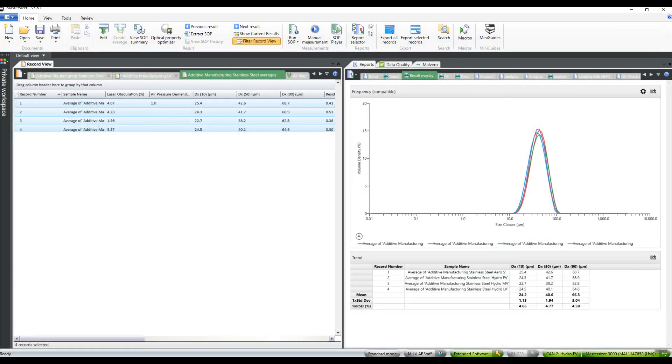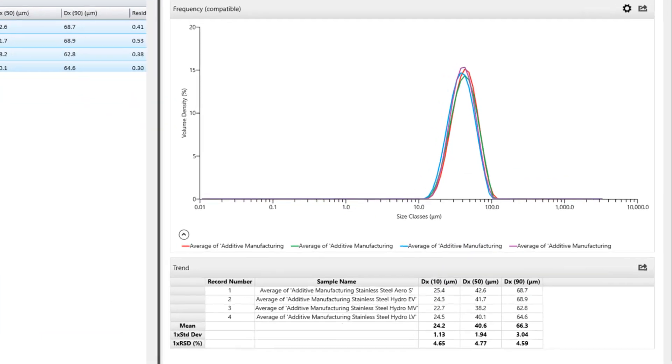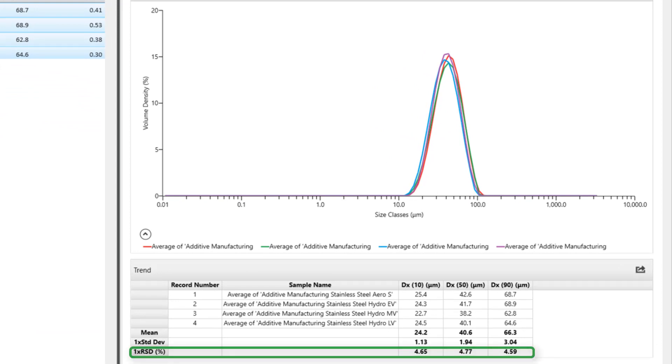Finally, we can take a look at a comparison of the results from the Aero S and Hydro EV, MV and LV. A low variance is observed, as indicated by the relative standard deviations. The same stir speeds were used for the three wet dispersion units, which produces slightly different dispersions of the metal powder due to differences in the tank designs.